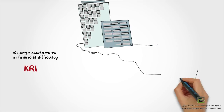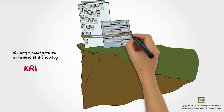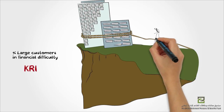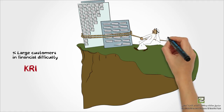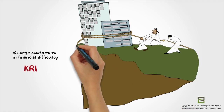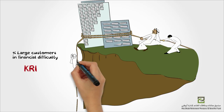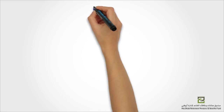A large percentage of customers in financial difficulty can be a KRI, as it indicates how large the company's exposure is towards its clients. A large percentage of customers with financial problems can affect the cash flow of the organization.